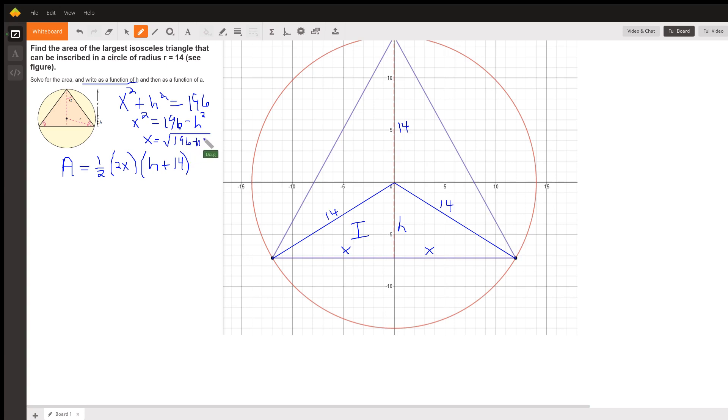And by the way, if this chord was above the diameter, then H would be a negative number, but the diagram shows H is a positive number. So, what we want to do is substitute this value for X into the formula for A, or area.